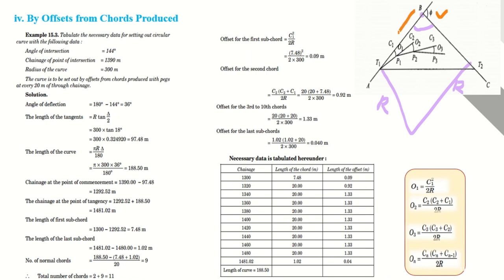The tangent length T is equal to R × tan(Δ/2), where Δ is the deflection angle. Putting in the values, T comes out to 97.48 meters. The length of curve is calculated as R × Δ × π/180, where the radius is given and alpha or delta is the deflection angle divided by 180.